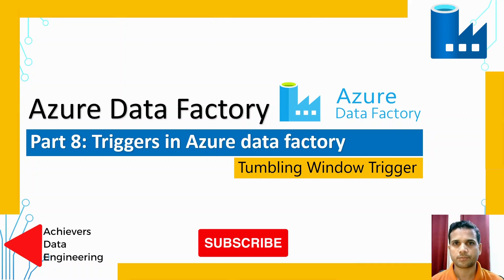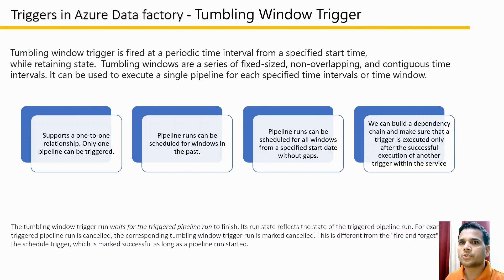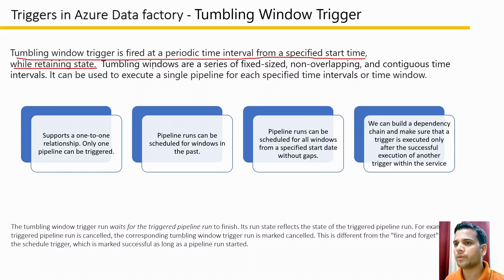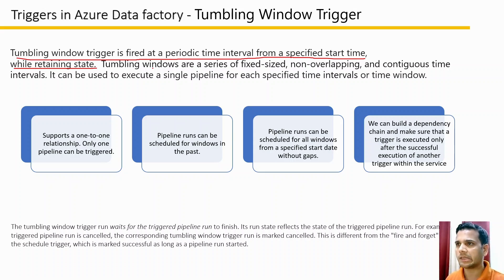Tumbling window triggers are fired at a periodic time interval from a specified start time while retaining state. It is more similar to what we have in schedule-based triggers; however, there are some properties available in the tumbling window trigger which make it distinguished from schedule-based triggers.